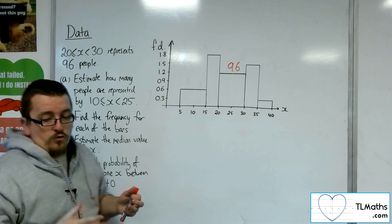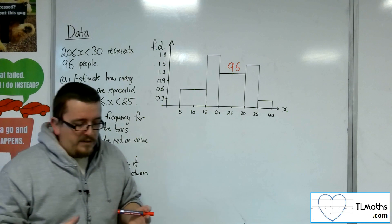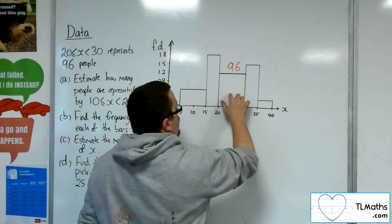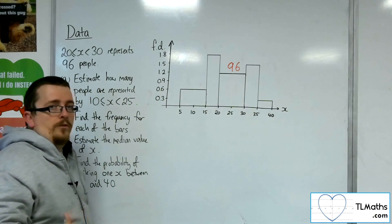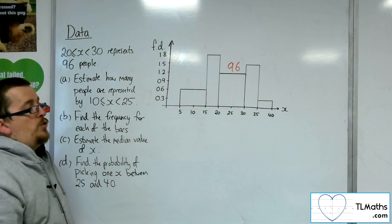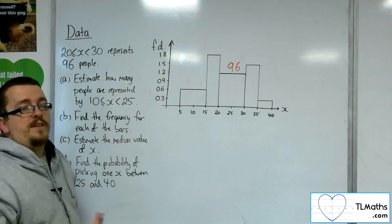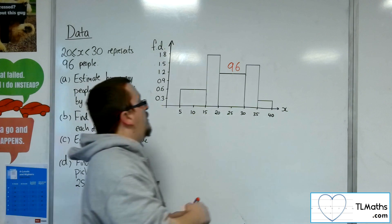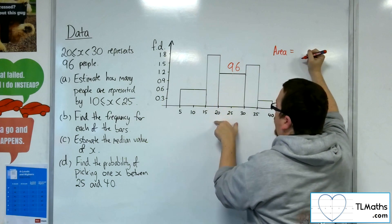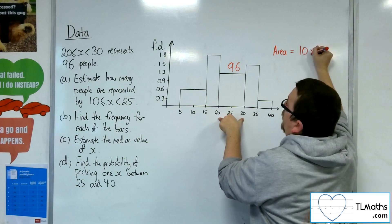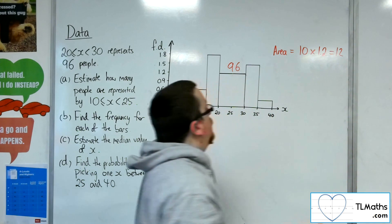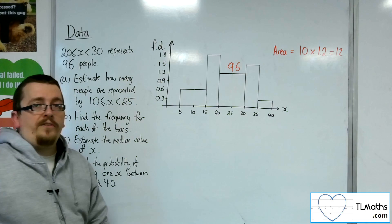The first thing that we need to remember is that the area of the bar from GCSE was equal to the frequency. However, we're in situations now where that is not necessarily the case, because I can work out the area of that block. That's 10 by 1.2, so 12, and clearly that's not the frequency. I know that the frequency is 96.